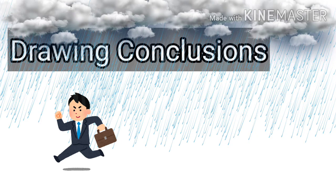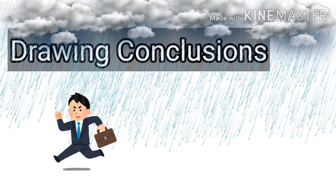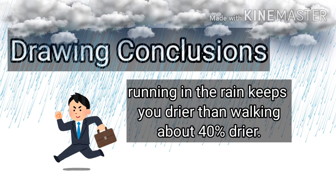Next, we have drawing conclusions. The scientists' rainy day experiment produced some convincing data. The clothes of the walking scientist accumulated 217 grams of water, while the clothes of the running scientist accumulated 130 grams of water. Based on their data, the scientists concluded that running in the rain keeps you drier than walking — about 40 percent drier, in fact. Now you have scientific evidence to support the hypothesis stated earlier.